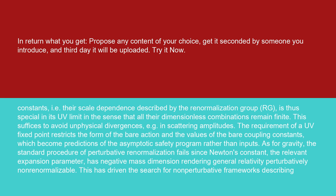The running of the coupling constants, i.e. their scale dependence described by the renormalization group RG, is thus special in its UV limit in the sense that all their dimensionless combinations remain finite. This suffices to avoid unphysical divergences, e.g., in scattering amplitudes. The requirement of a UV fixed point restricts the form of the bare action and the values of the bare coupling constants, which become predictions of the asymptotic safety program rather than inputs.